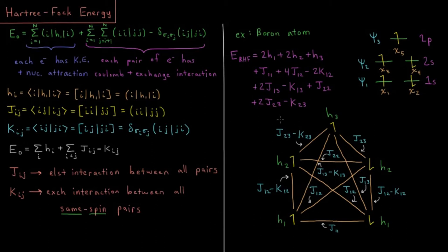So adding up all those terms together, we get our 2-electron energy being J11 plus 4J12, minus 2K12, plus 2J13 minus K13, plus J22, plus 2J23, minus K23.